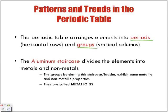The aluminum staircase separates the elements into metals and non-metals, and the groups bordering the staircase or ladder exhibit some metallic and non-metallic properties — these are what we call metalloids. They pretty much lie along the borders of the aluminum staircase or aluminum ladder.